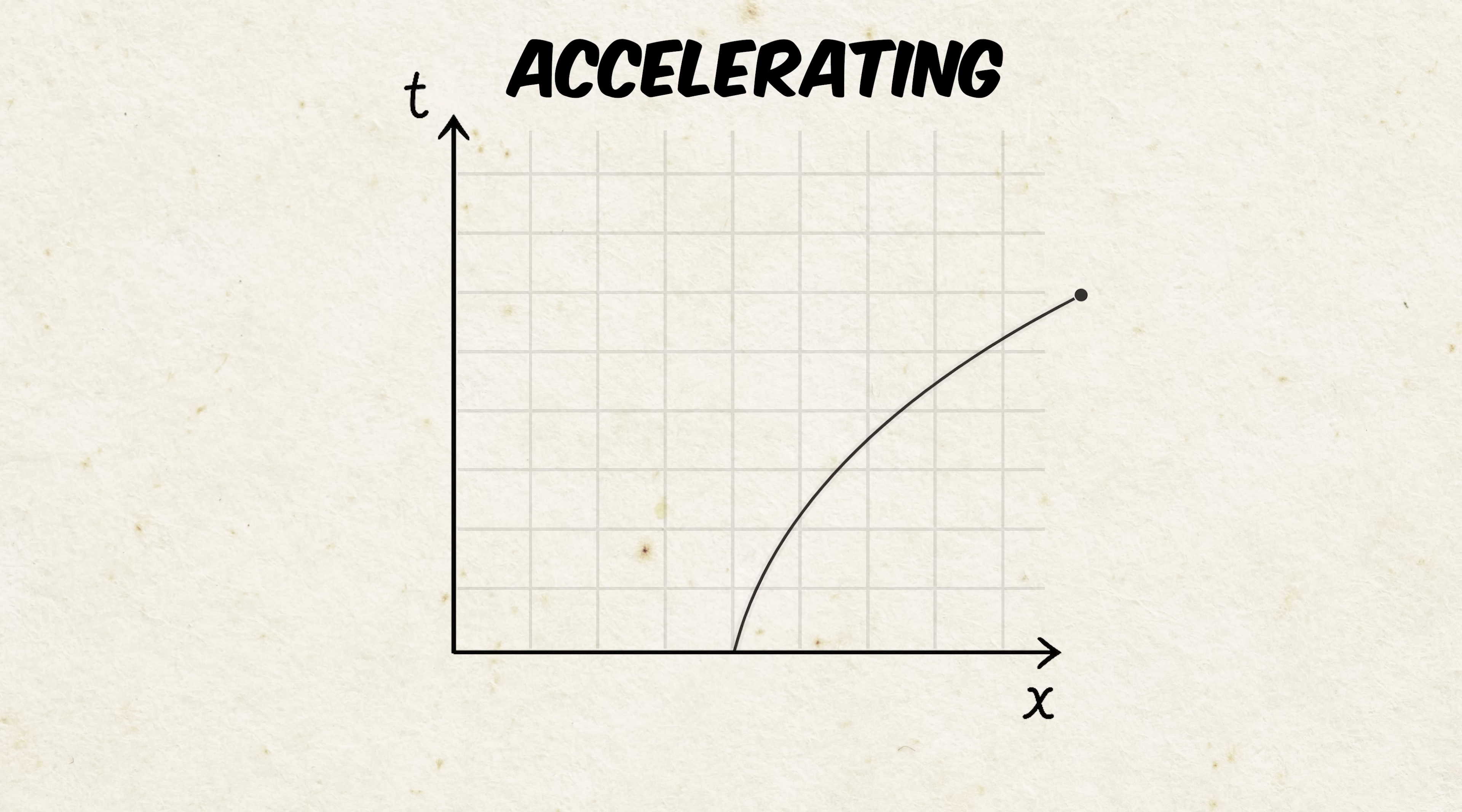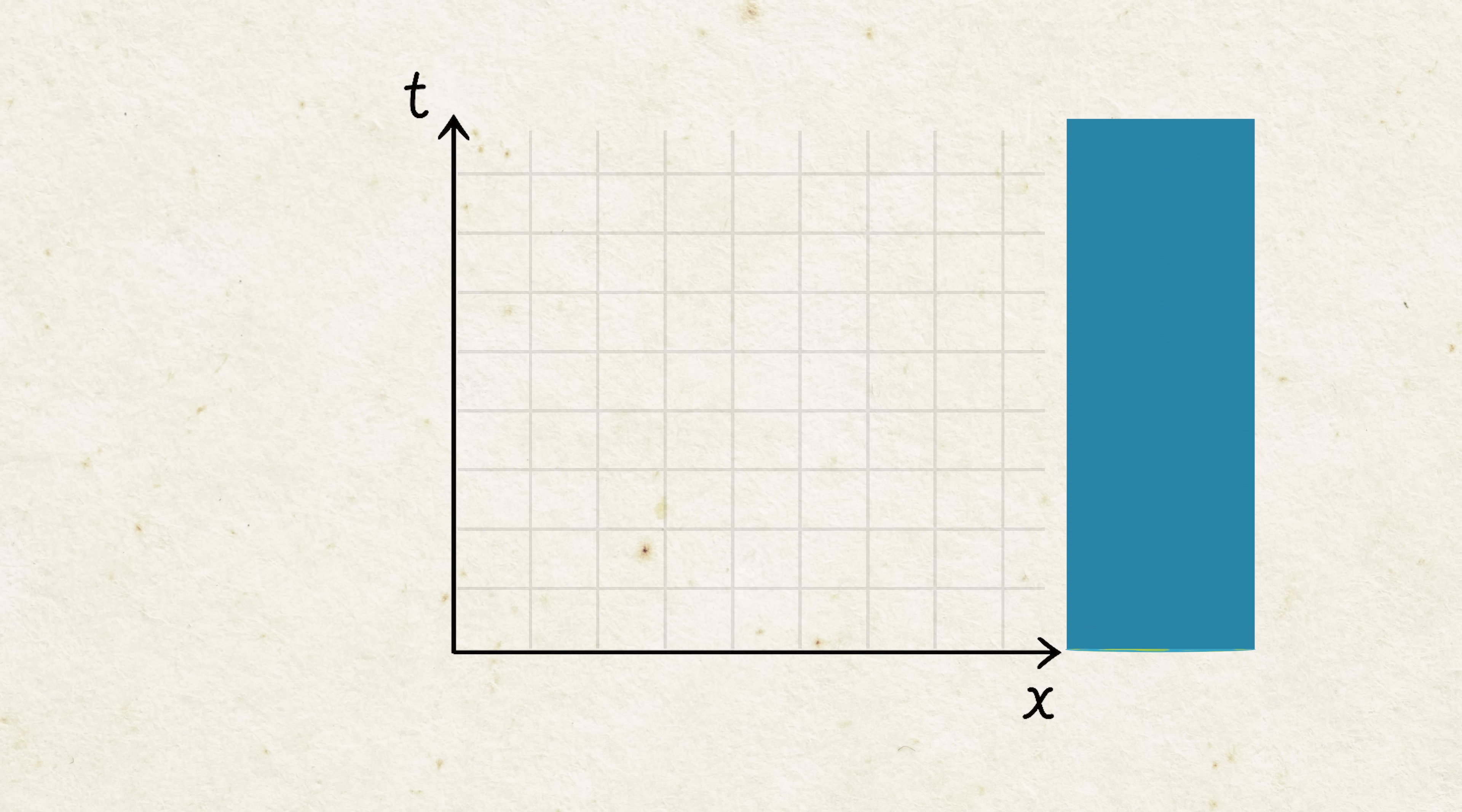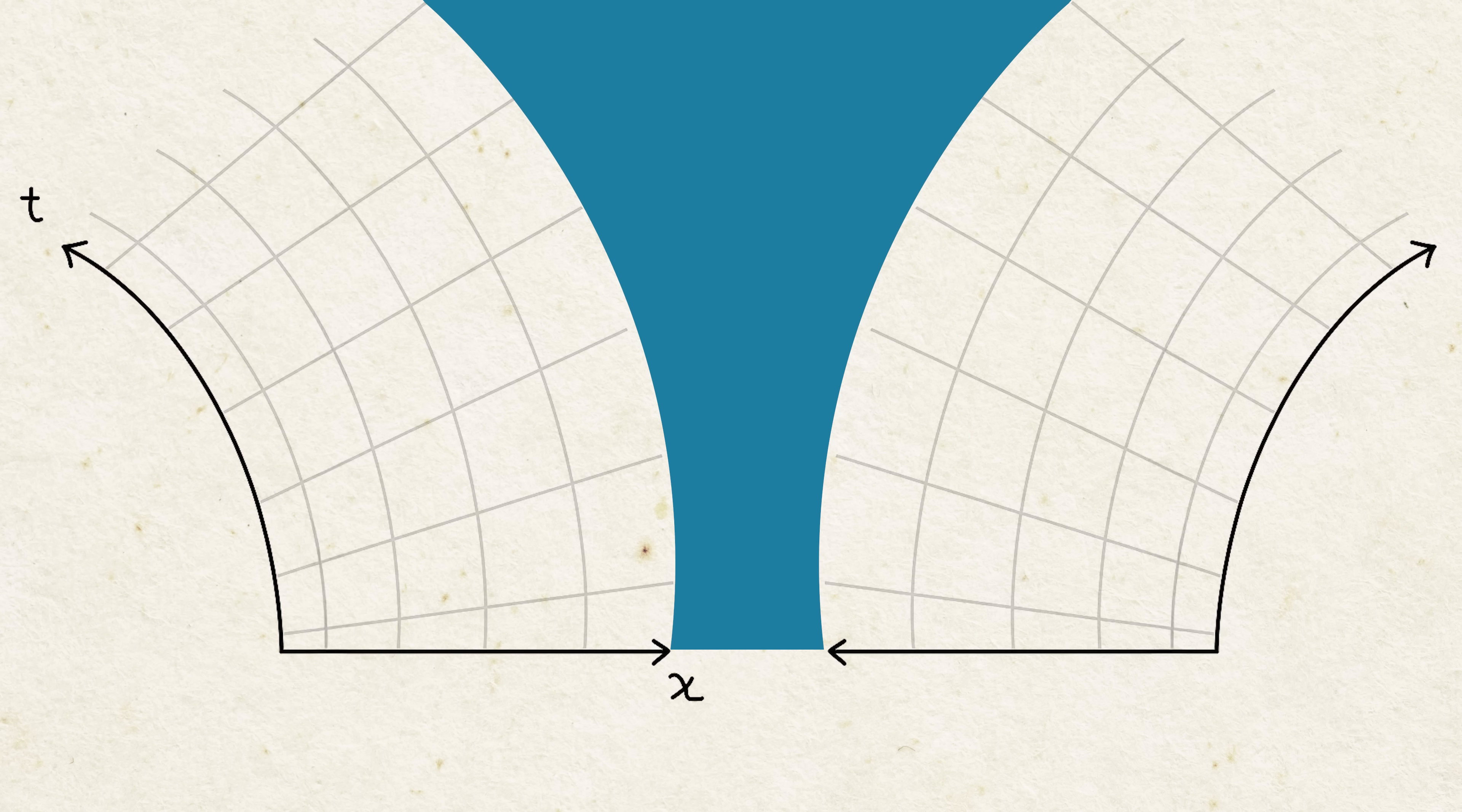Now let me show you what happens to these lines when something with mass is introduced. Let's say I have something with a lot of mass, like the Earth. Well, in this case, it's a one-dimensional Earth, and it's stationary, so from its worldview, it's just moving in a straight line through time. But because it has a lot of mass, it actually does something to the graph itself. It bends it.